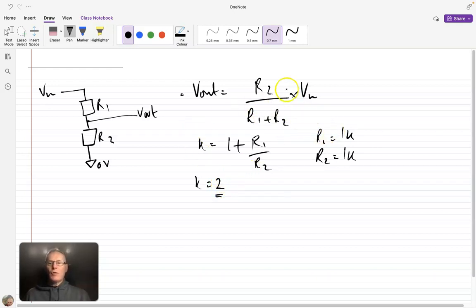And indeed, if we put 1K divided by 1K plus 1K into this equation here, we will see that we get half. So we are getting half the voltage output that we put in, i.e. our attenuation coefficient is 2.